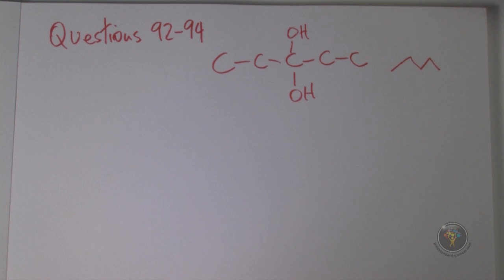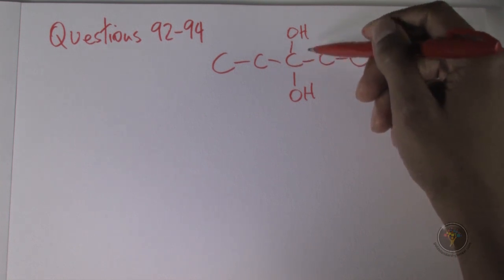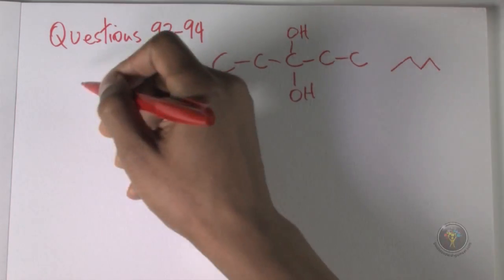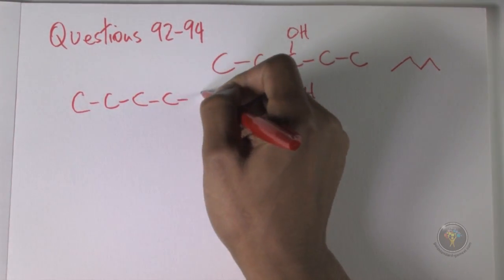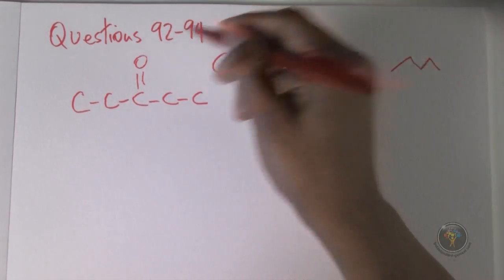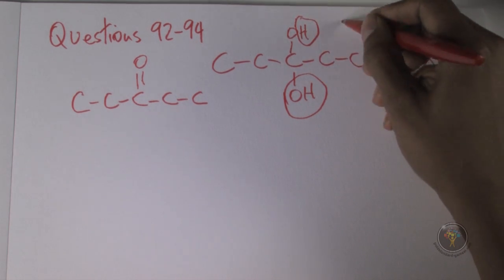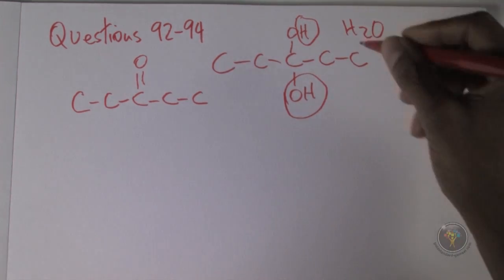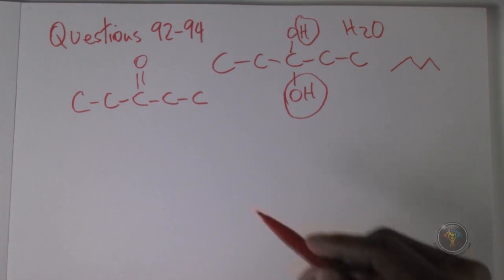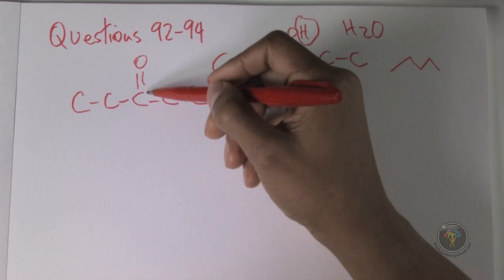Now the passage says that two hydroxy groups on the same atom is unstable and you get a loss of water from the two groups, resulting in the formation of a carbonal group. So I'm going to redraw this same thing, one, two, three, four, five, and instead of these I put a carbonal group because this is unstable and we lost water. We lost OH and hydrogen, that makes H2O, and we're left with a carbonal group.